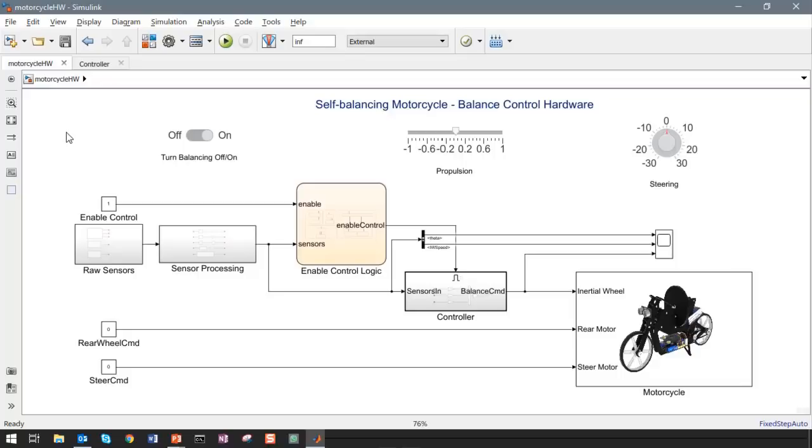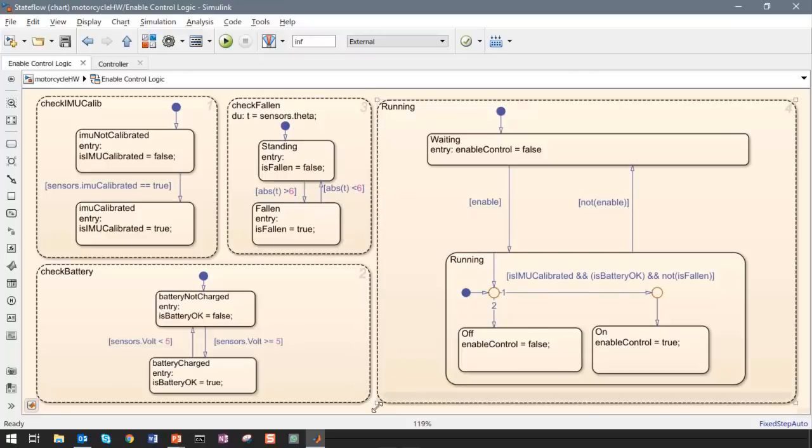The biggest addition in the hardware model when compared to the simulation model is the presence of the enable control logic. In Simulink, you can implement supervisory control algorithms in a graphical way which can simplify the process of programming, debugging, and executing that logic. This graphical implementation can be used for sequential tasks. For example, here we are first calibrating the IMU sensor, then checking the flywheel saturation speed, and finally running the self-balancing algorithm. We can also use this to write event-based logic. For example, here we are doing actions based on specific events such as if the motorcycle has fallen, if the IMU is calibrated, etc. If we were to implement this supervisory control logic with textual programming, then the number of if-else and switch case statements that you would be using would be quite large.